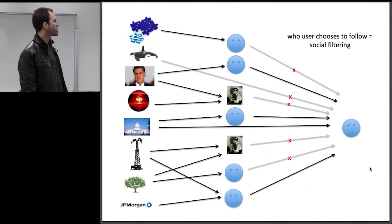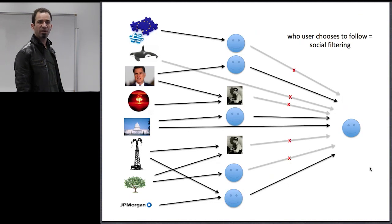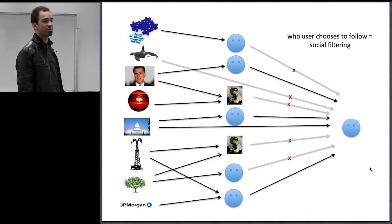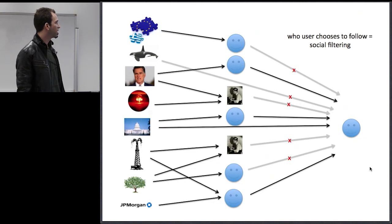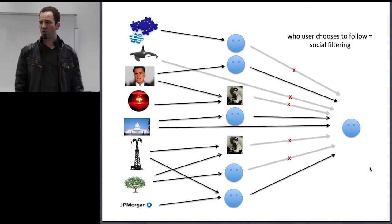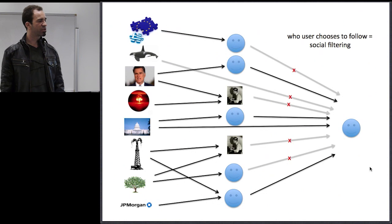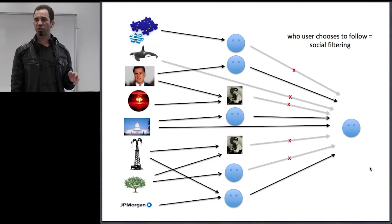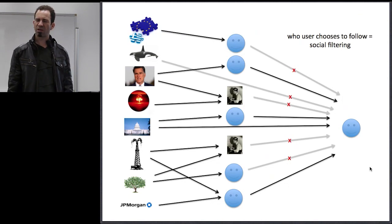In the simplest case — probably the Twitter model — what information you get is entirely a function of who you decide to follow. That's a purely social filter. There's software involved, but you couldn't really call it an algorithm. Is letting someone follow somebody an algorithm? It's social media — that's how it works.